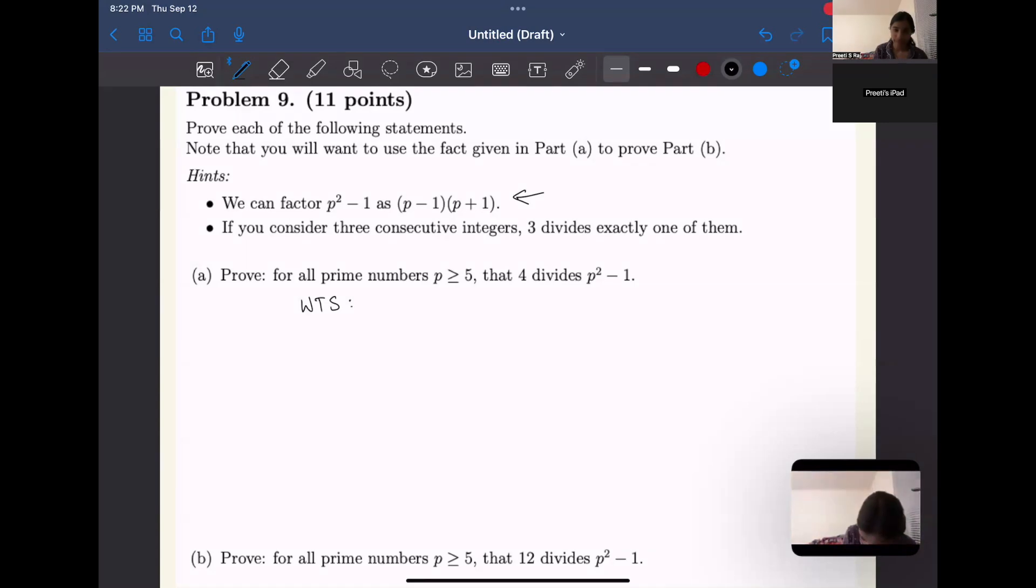So my want to show is for all prime numbers p, where p is prime and p is greater than or equal to five, then four divides p squared minus one. I can kind of rewrite that as p squared minus one is equal to four times some integer, and that's just coming from the definition of divides.